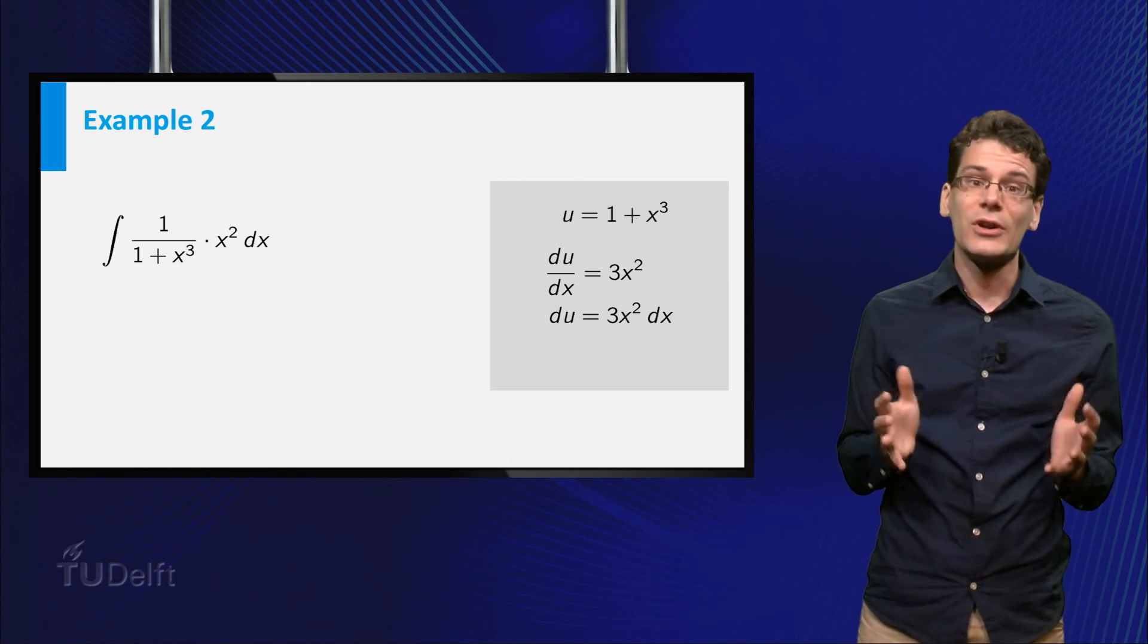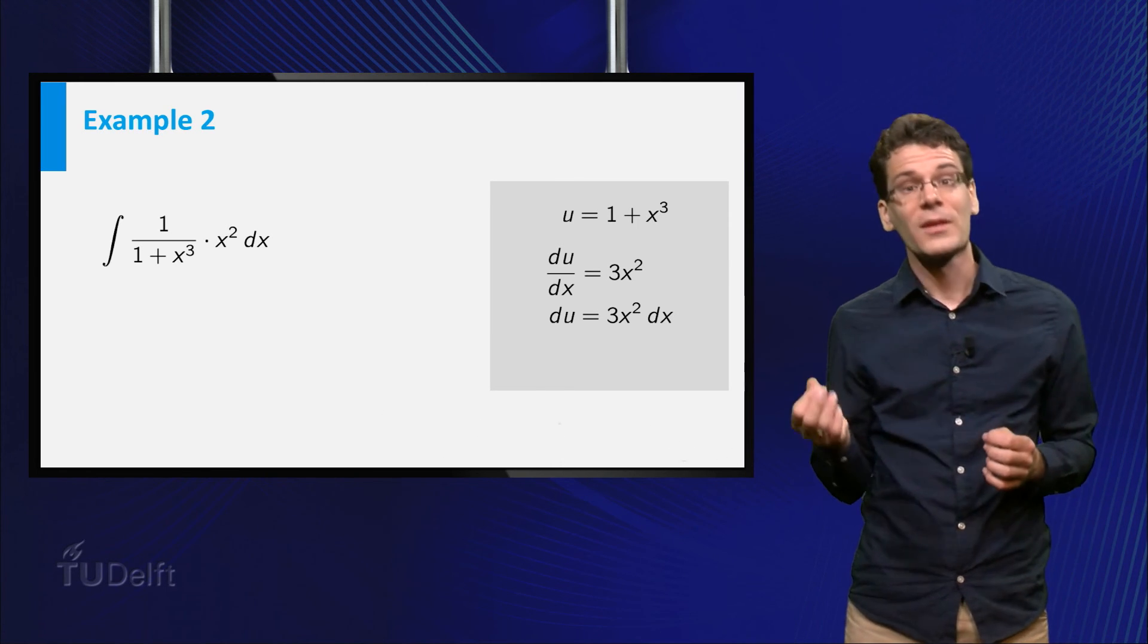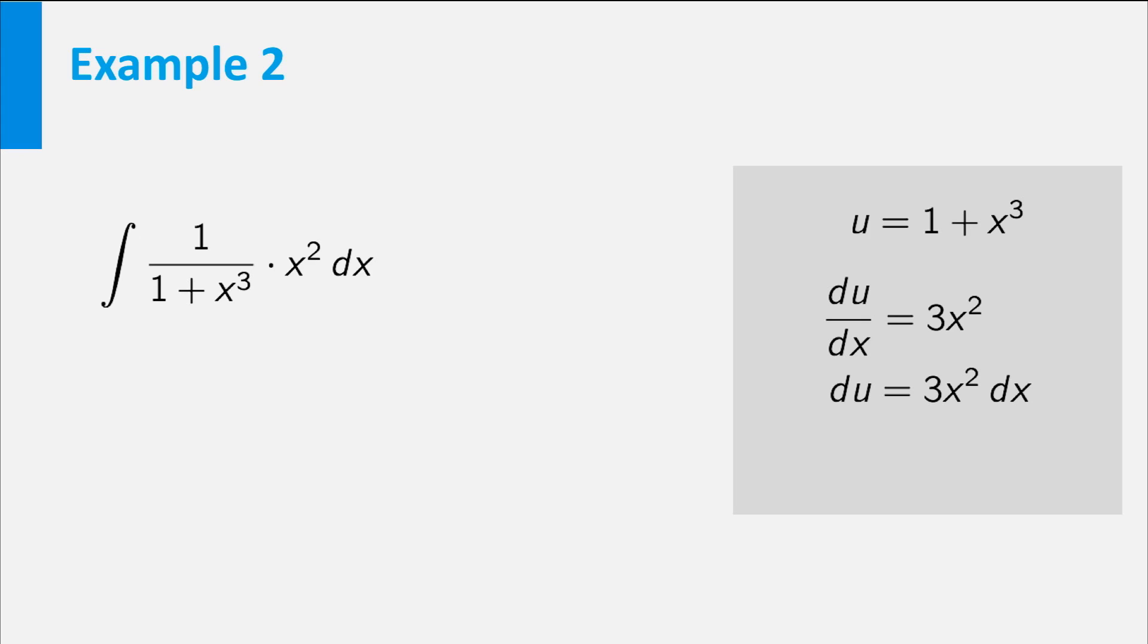The factor x squared dx occurs in the integral, but the factor 3 does not occur. But we can rewrite the relation between du and dx as 1 over 3 du equal to x squared dx. Now we can re-express the entire integral in terms of u and du. Remember, there should be no more x or dx. We get the integral of 1 over u times 1 over 3 du. This is equal to 1 over 3 times the logarithm of the absolute value of u plus c.